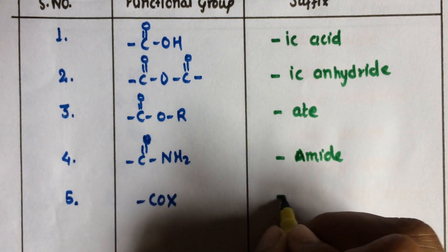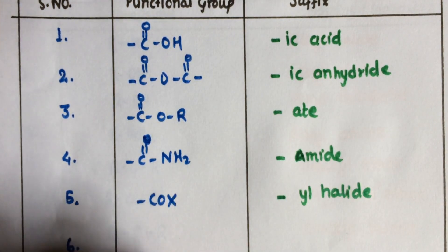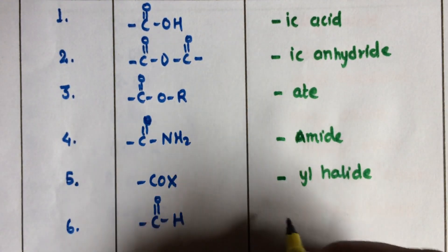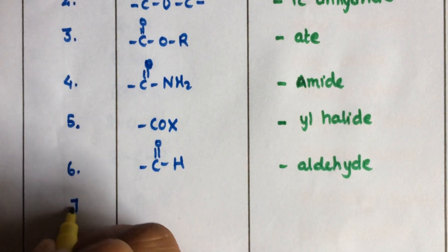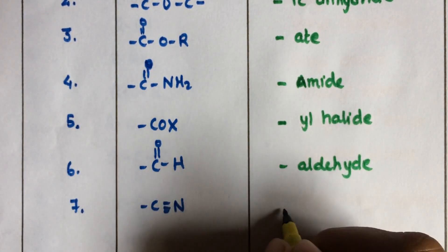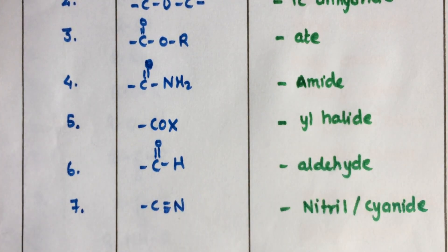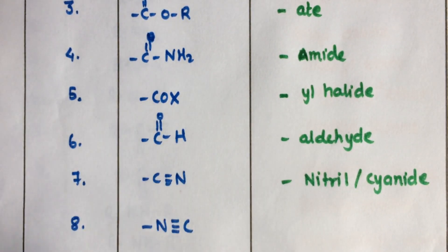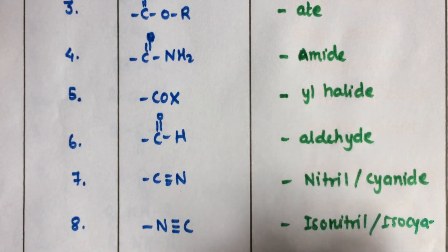Acid halides have the suffix '-yl halide'; amides have the suffix '-amide'; aldehydes have the suffix '-aldehyde'; cyanides have the suffix '-cyanide' or '-nitrile'; and isocyanides have the suffix '-isonitrile' or '-isocyanide'.